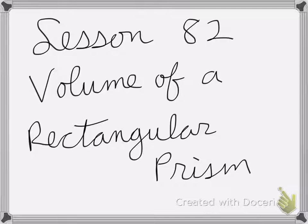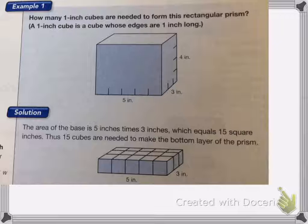All right, so lesson 82 is on the volume of rectangular prism. So here we have my rectangular prism and it's how many one-inch cubes are needed to form this rectangular prism. And then a one-inch cube is a cube whose edges are one inch long.